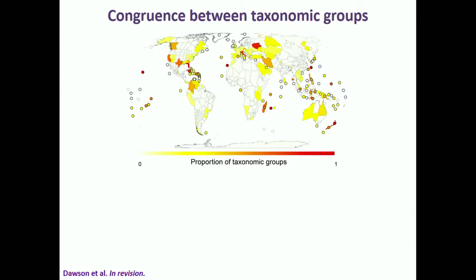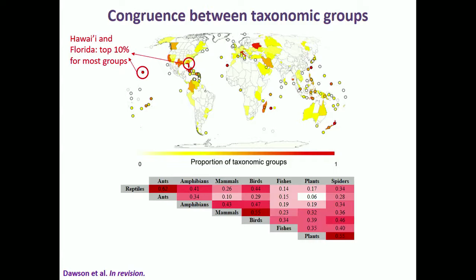Another way of looking at hotspots is to examine overlap across taxonomic groups — which regions are within the 10% richest for multiple groups. Hawaii and Florida again appear, with the majority of their groups in the top 10%. Pairwise correlations among taxonomic groups show three strong correlations: plants and spiders, mammals and birds, and reptiles and ants.